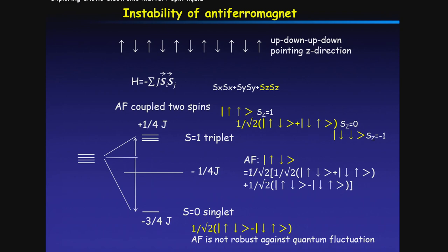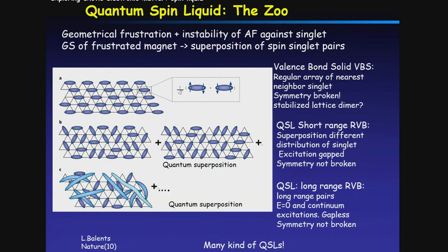Consider an anti-ferro-like situation — just up-down. As you can see, this anti-ferro situation is a superposition of 50% triplet and 50% singlet. So this configuration has energy minus quarter J. By combining two different configurations, you gain some energy here. Sometimes people say the anti-ferromagnet is not robust against quantum fluctuation, and a superposition — the singlet — is more stable. I think that's the basis of Anderson's argument.